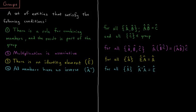So if a set of entities follows all of these four conditions, that there is a combination rule, it's associative, they have an identity, and they have an inverse, then they form a group.